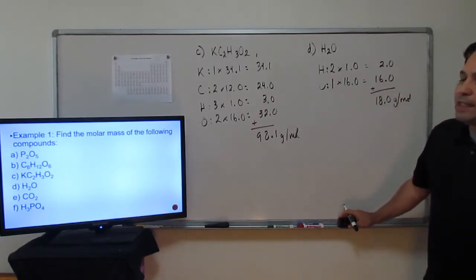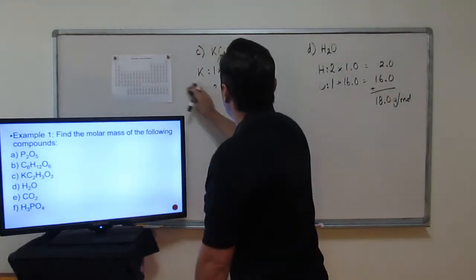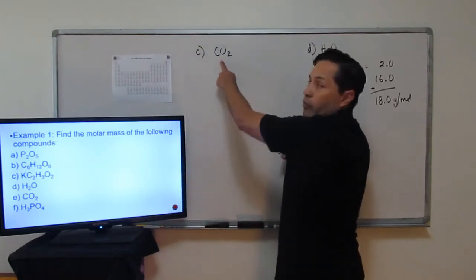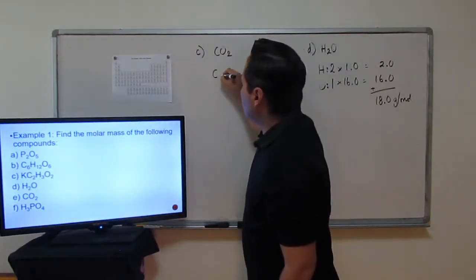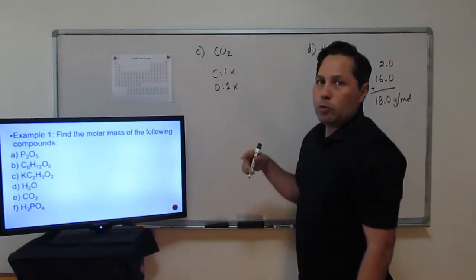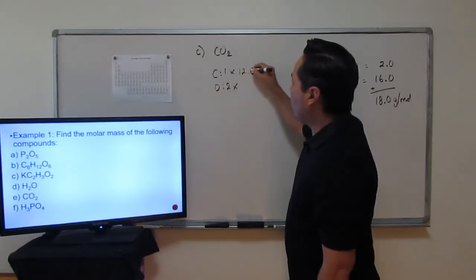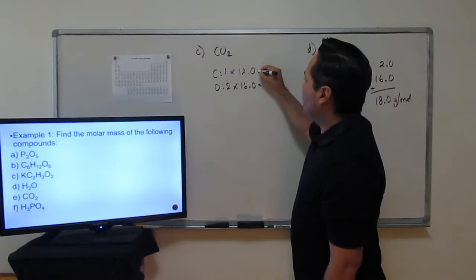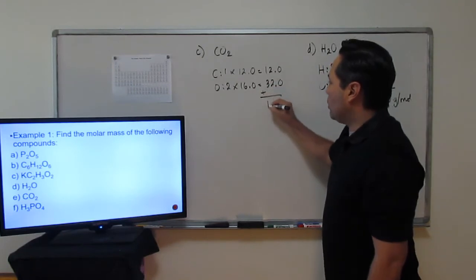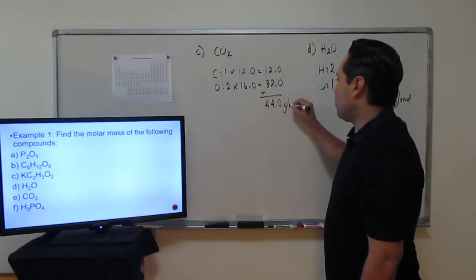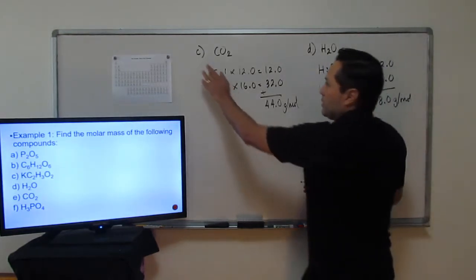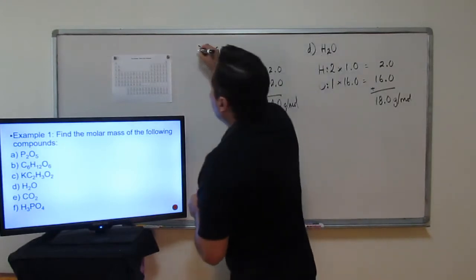Let's move along to letter E: carbon dioxide, CO₂. There's no number for the C, so there's one carbon — C₁O₂. Multiply times the mass from the periodic table: 12.0 and 16.0. That gives products of 12 and 32. Add them together for the grand total: 44 grams per mole.